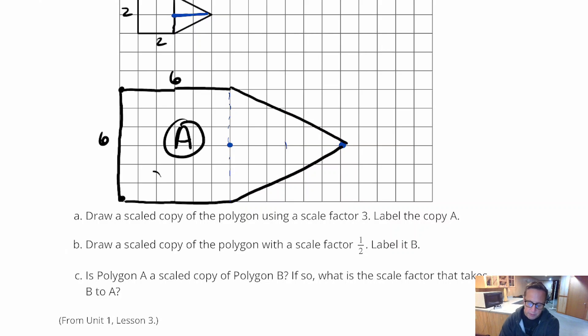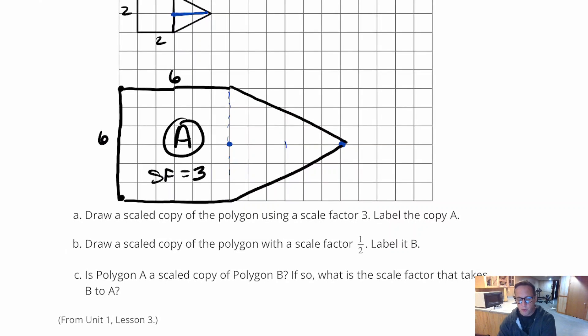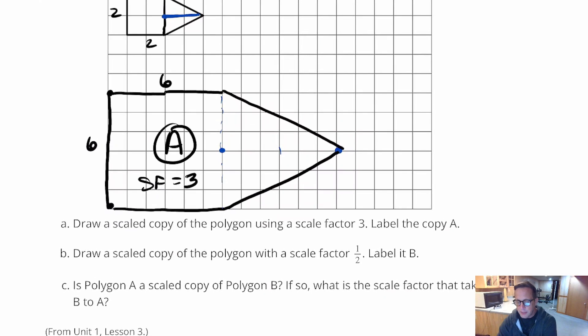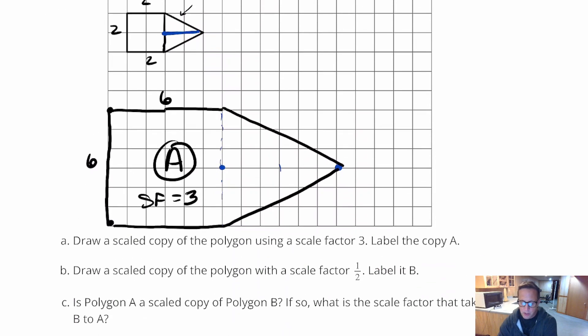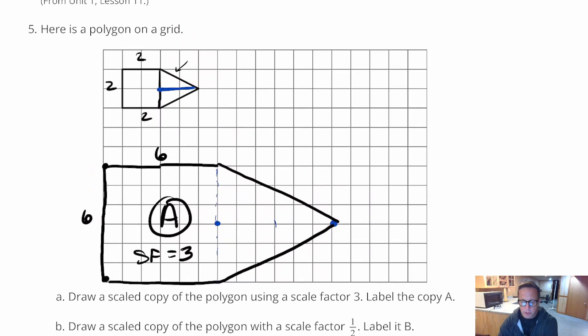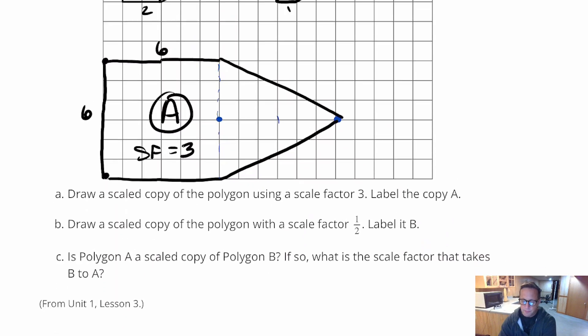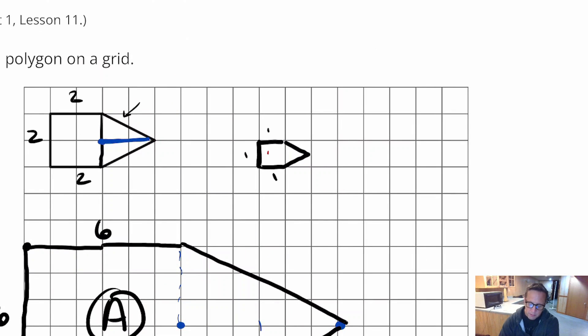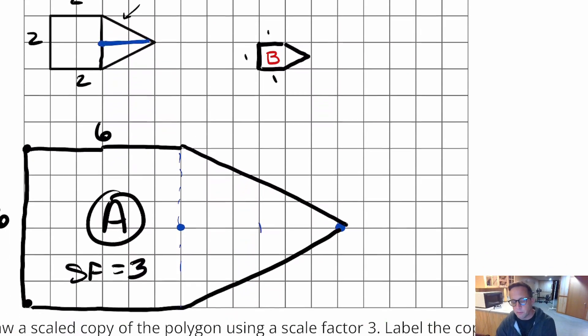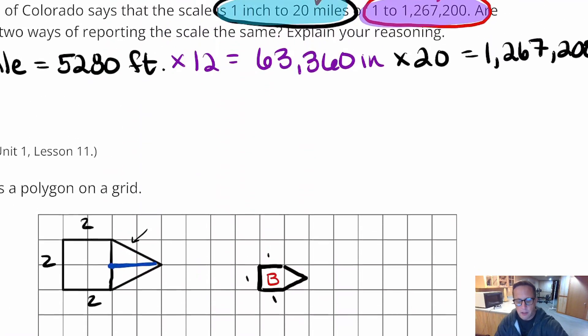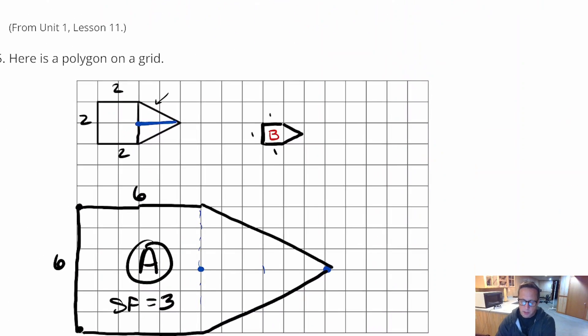Alright so I've got A. Draw a scaled copy of the polygon with a factor of 1 half. Alright so we're going to do the first one so everything's going to be 1 half so the 2's are going to become 1's. And then this part right there that's 1 half that's a lot tinier. There you go. And we're going to label that one B. B as in boy. Alright, and sorry about the noise.